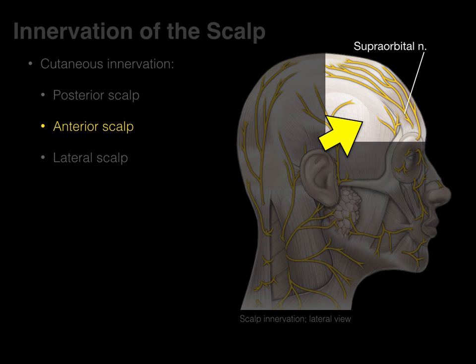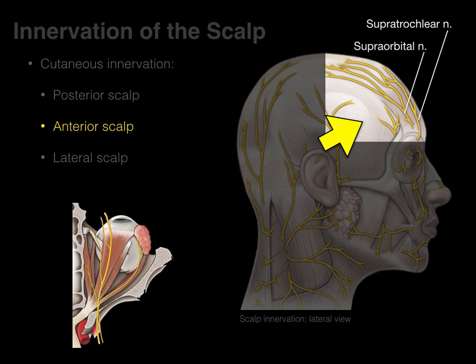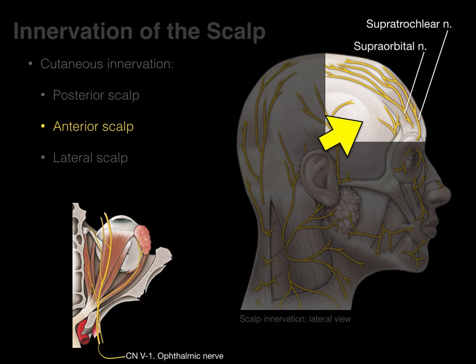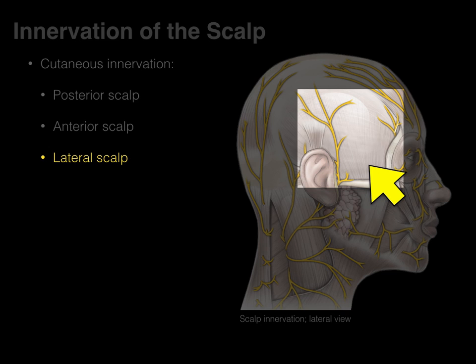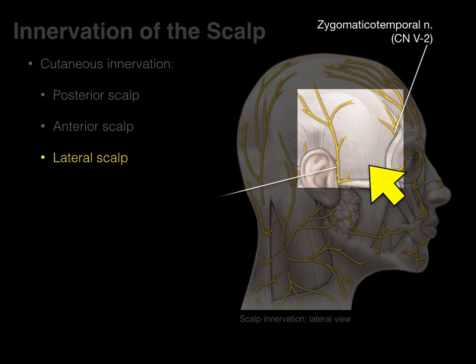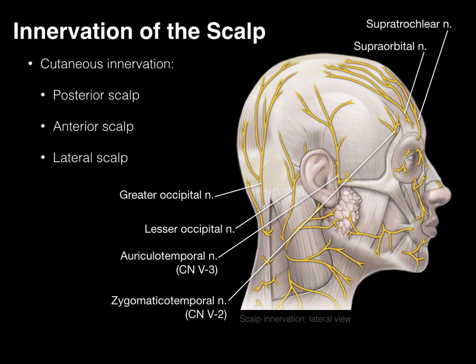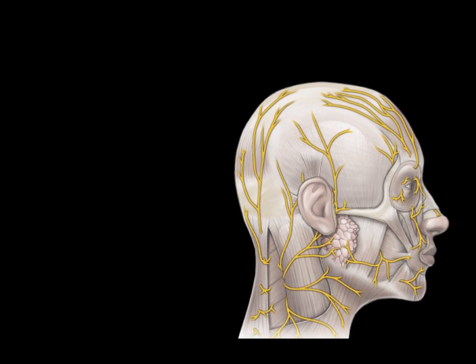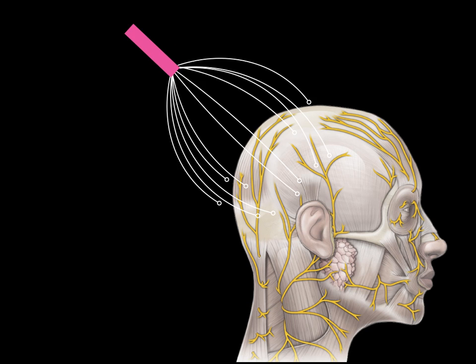For the anterior scalp, we have the supraorbital and supratrochlear nerves. The V1 branch from the trigeminal nerve — the ophthalmic nerve — gives rise to many branches, including the supraorbital and supratrochlear nerves. For the lateral scalp, there is a small zygomaticotemporal branch from V2, and also the larger auriculotemporal nerve from V3, the mandibular branch of the trigeminal nerve. Those are all the cutaneous nerves of the scalp.